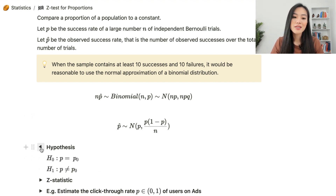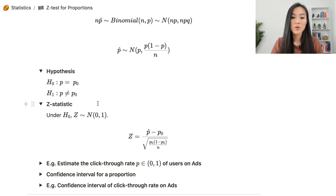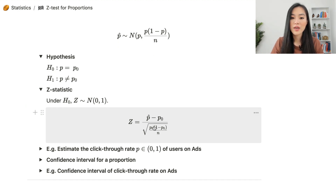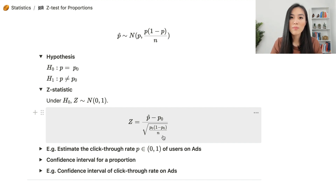In terms of the one-proportion test, the hypothesis looks like this. The null hypothesis is p equals p0, and the alternative hypothesis is p is not the same as p0. Under the null hypothesis, the test statistic follows a standard normal distribution. The test statistic is p-hat minus p0 over the square root of p0*(1-p0)/n. Based on this, we can calculate the observed z-statistic and compare it with the z critical value. If the observed statistic is larger than the critical z value, then we can reject the null hypothesis.